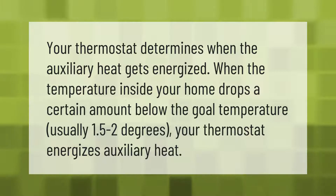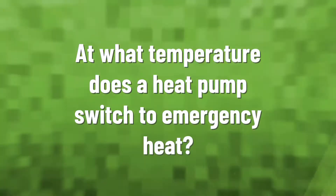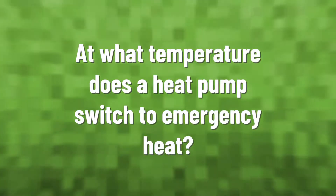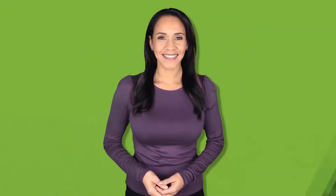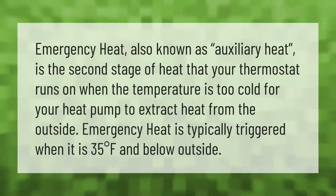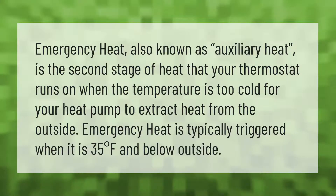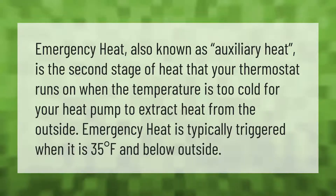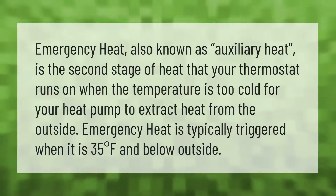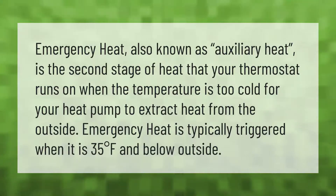Emergency heat, also known as auxiliary heat, is the second stage of heat that your thermostat runs on when the temperature is too cold for your heat pump to extract heat from the outside. Emergency heat is typically triggered when it is 35 degrees Fahrenheit and below outside.